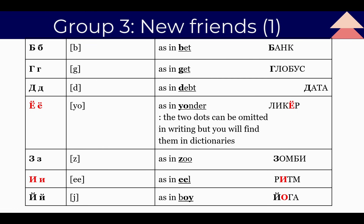The next group is 'new friends' — group number three. Let's learn new letters. The first new letter is Б, sounds 'B,' as in 'bet.' The Russian word банк — can you guess the translation? Yes, it's bank! Very easy, nothing difficult.